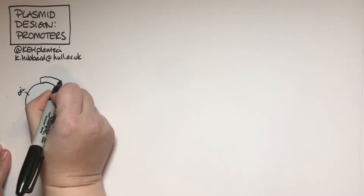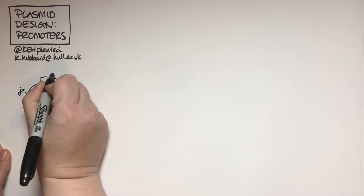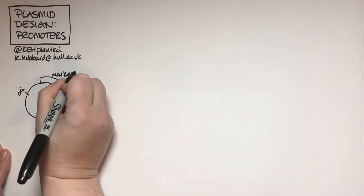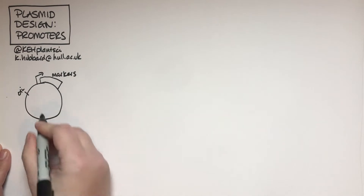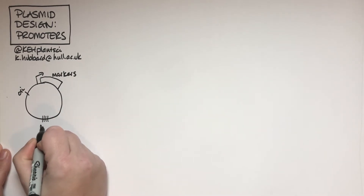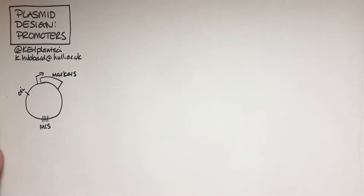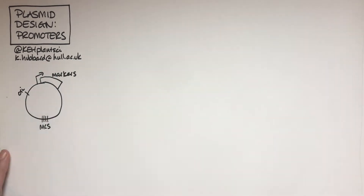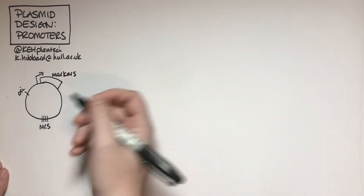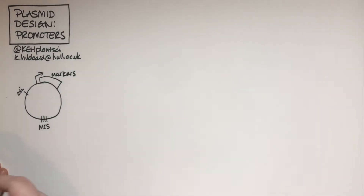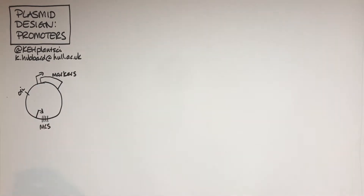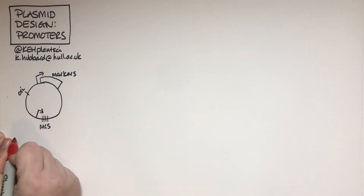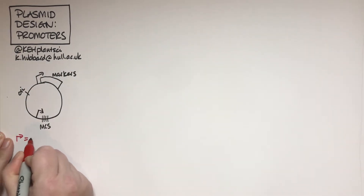You might have a selectable marker gene, such as an antibiotic resistance gene, and then you might have a multiple cloning site - there are other videos on how those are used in cloning. So that's our basic plasmid, and then we put our gene into the multiple cloning site via restriction cloning, for example. On my diagrams I've got these little arrows, and this arrow represents the promoter.